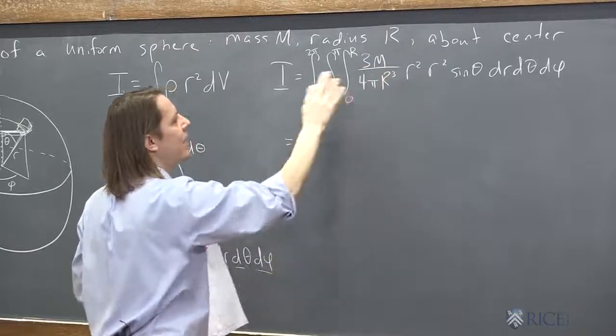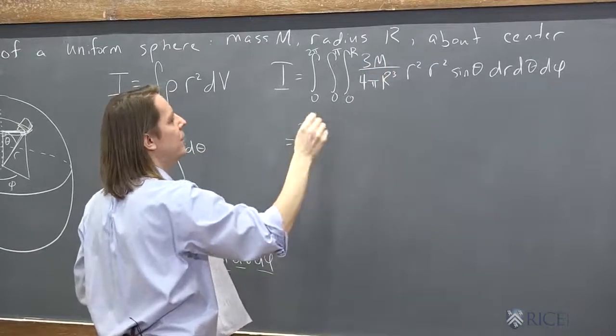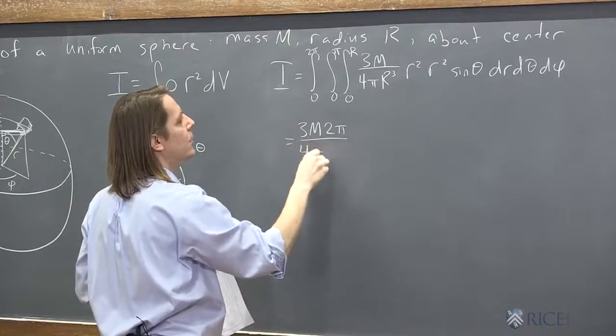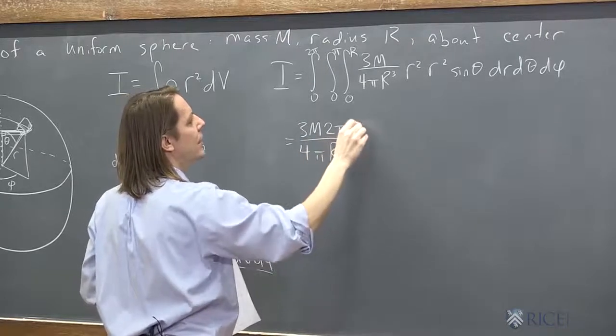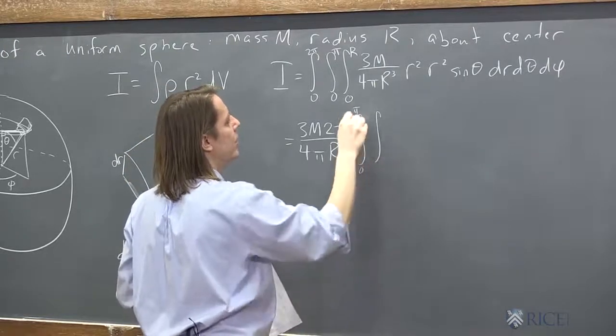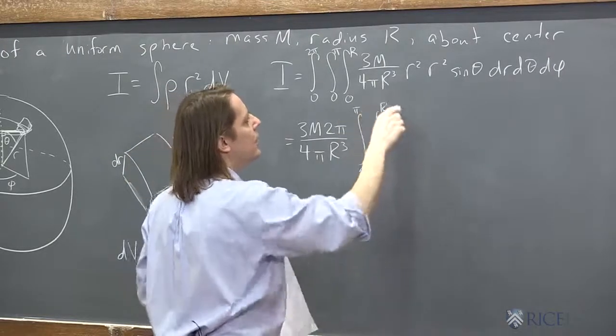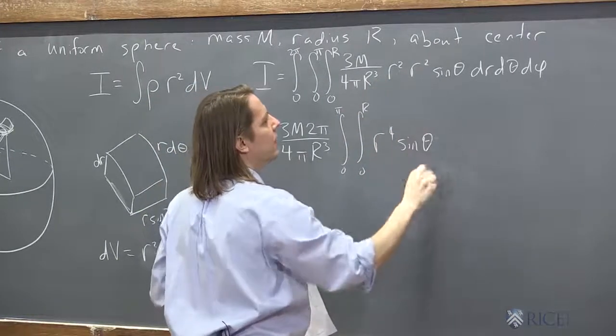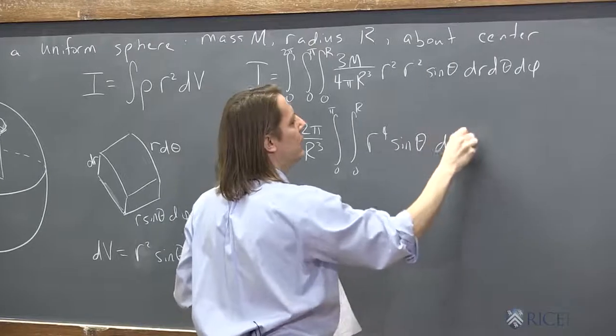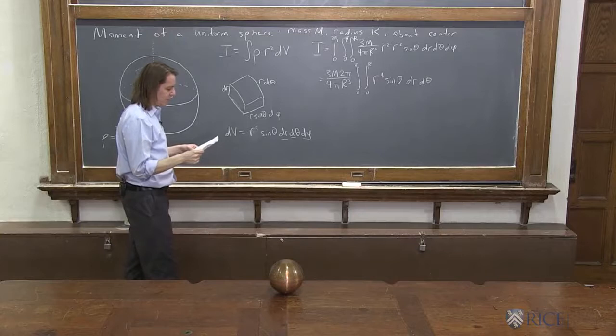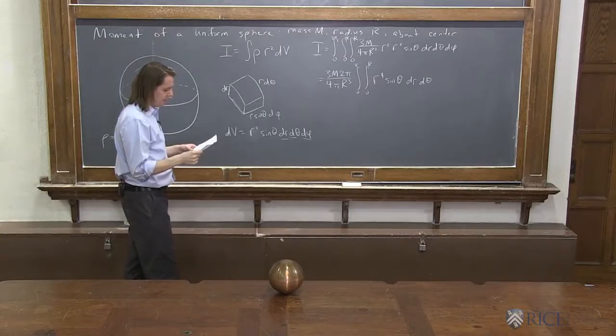So then we've got, let's pull these constants out: 3M, we can multiply by 2π, that's the phi integral, over 4π R cubed. We've still got to do the theta integral and the r integral, 0 to π, 0 to R, and now we can say r to the 4th sin θ dr dθ. That's promising, I suppose. r to the 4th sin θ dθ.